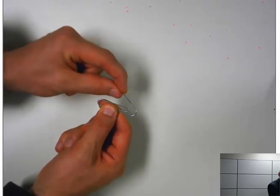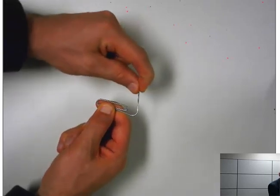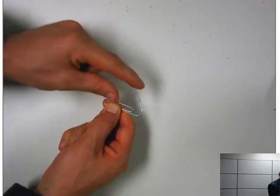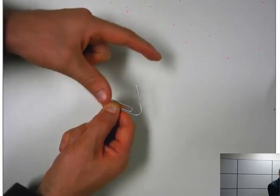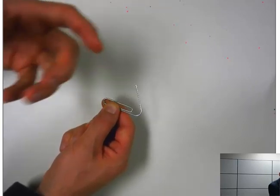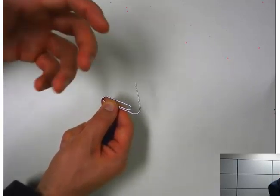If I apply a larger deformation and I let it go, I now have, I've opened the gap somewhat. So there's an additional strain that was not recovered when I released the applied stress. And that's what I call the plastic deformation.